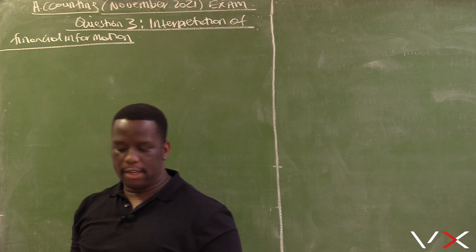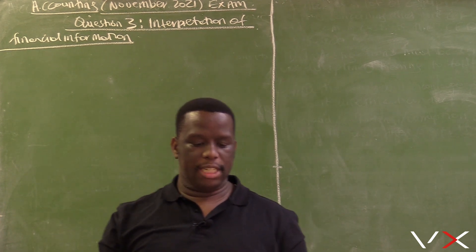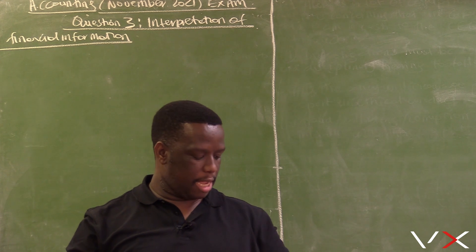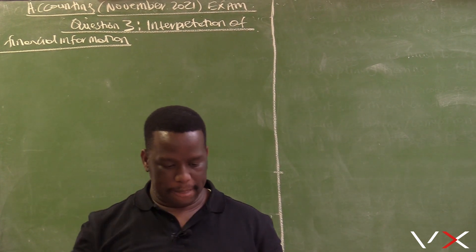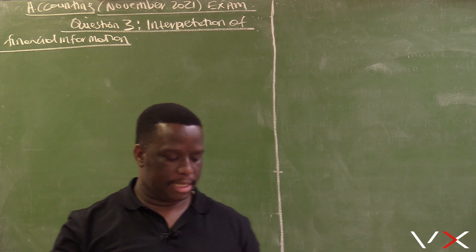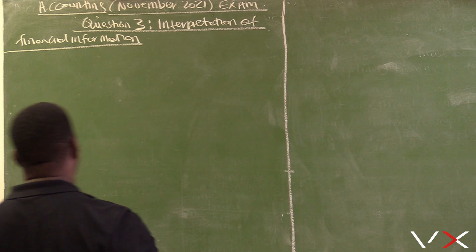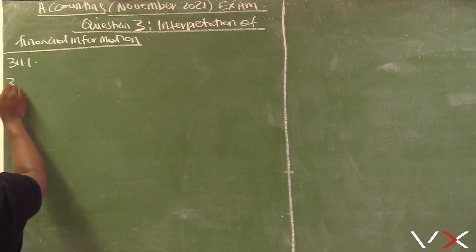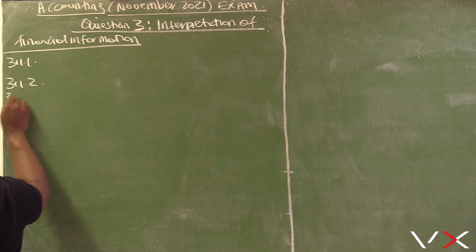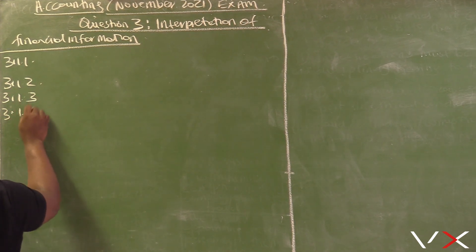Choose a category of indicators from column B that matches the description in column A. Write only the letter A to D next to the question numbers 3.1.1 to 3.1.4 in the answer book. So let's start: 3.1.1, 3.1.2, 3.1.3, 3.1.4.